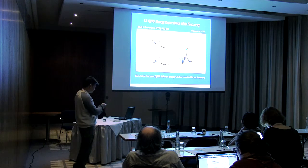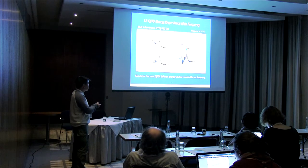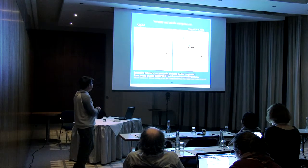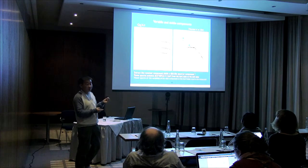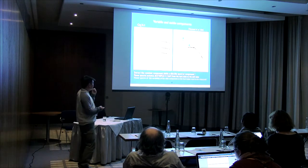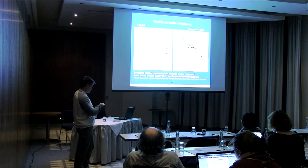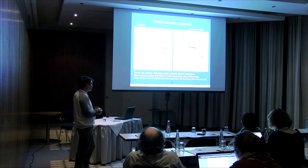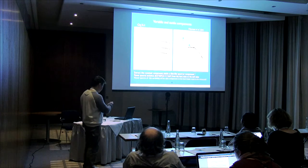Even in extreme cases, in some observations we can see that in different energy bands the QPO appears at different frequencies. Furthermore, if we really decompose the variability into a persistent component and a variable component, people have already found that the persistent component — the constant component — might be just a blackbody type. So that means if we look at this variability, then it's really small.